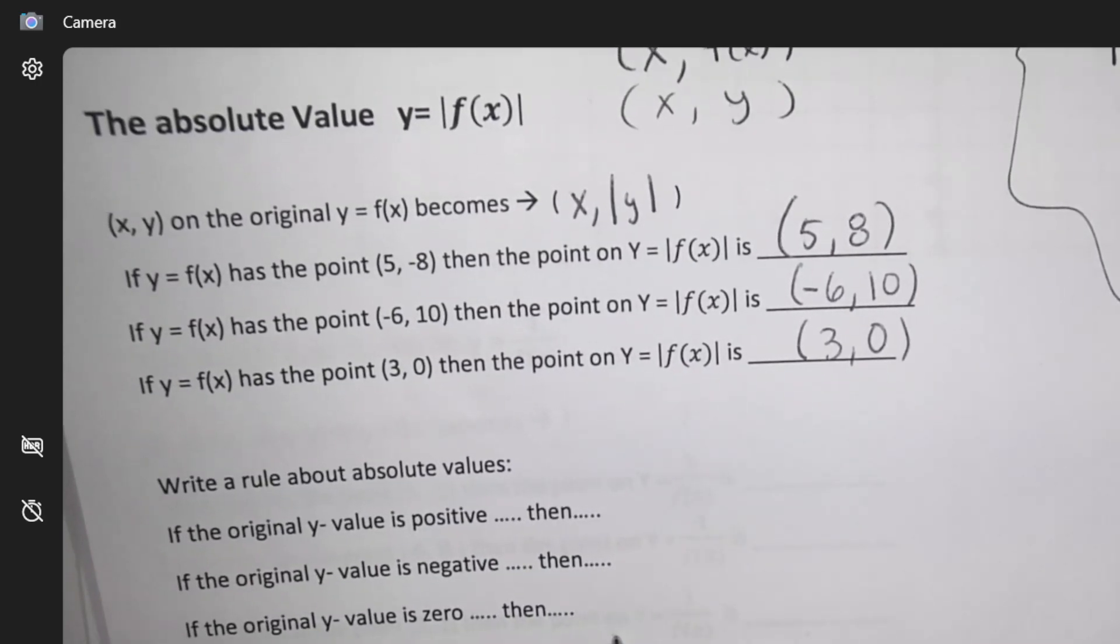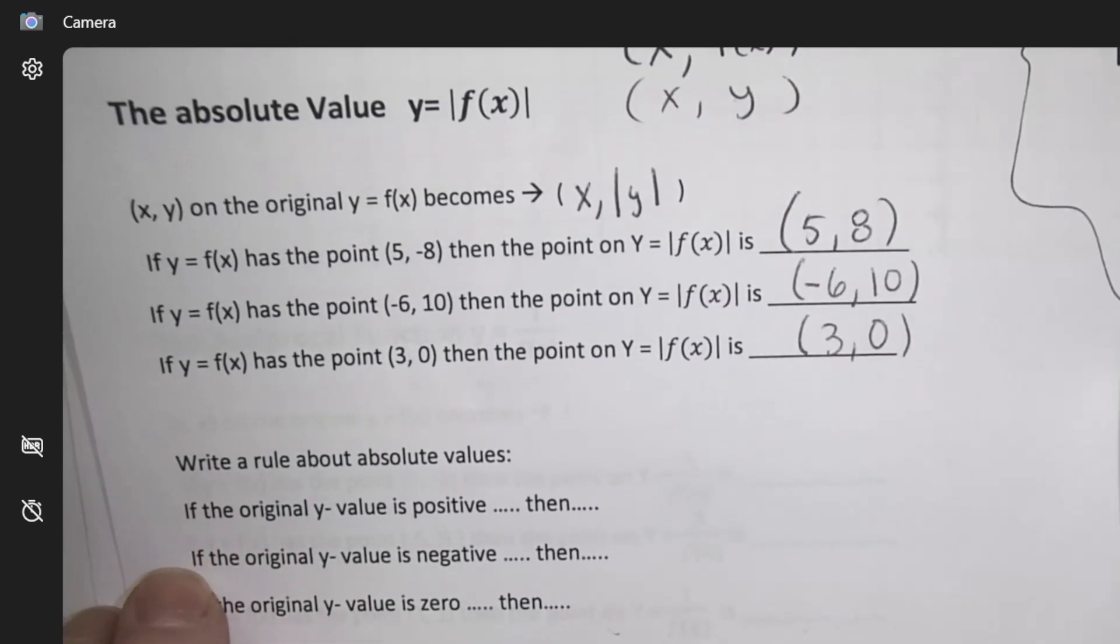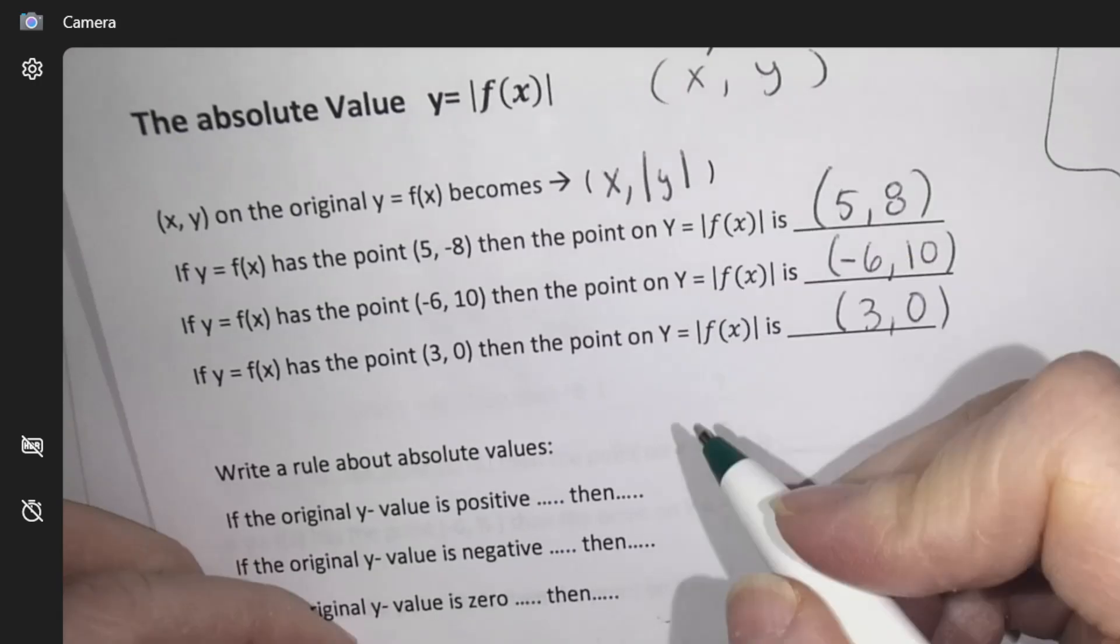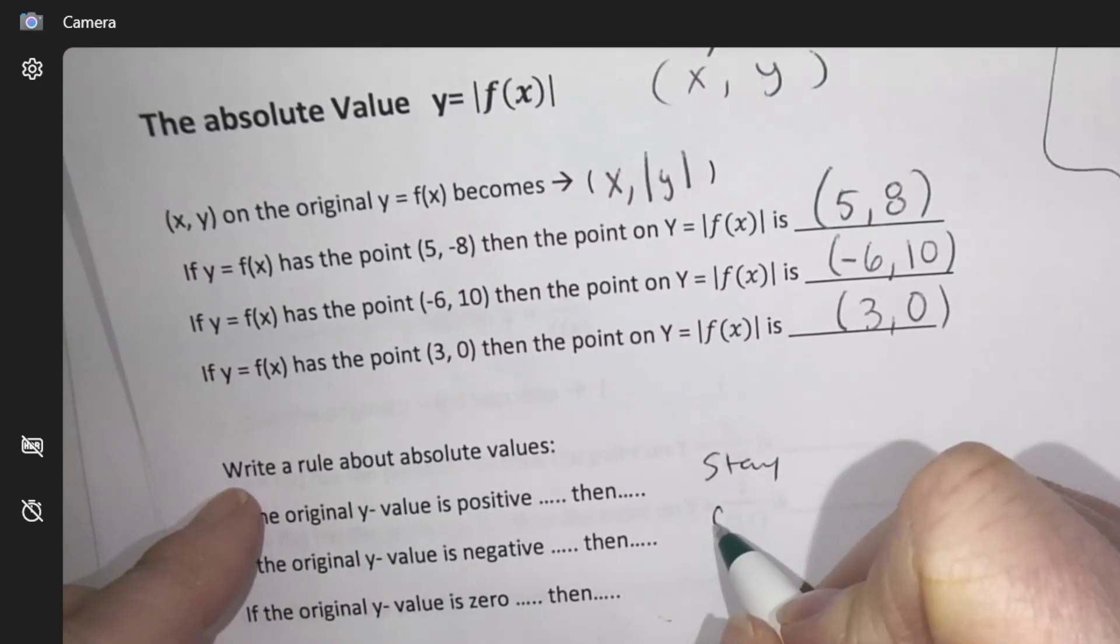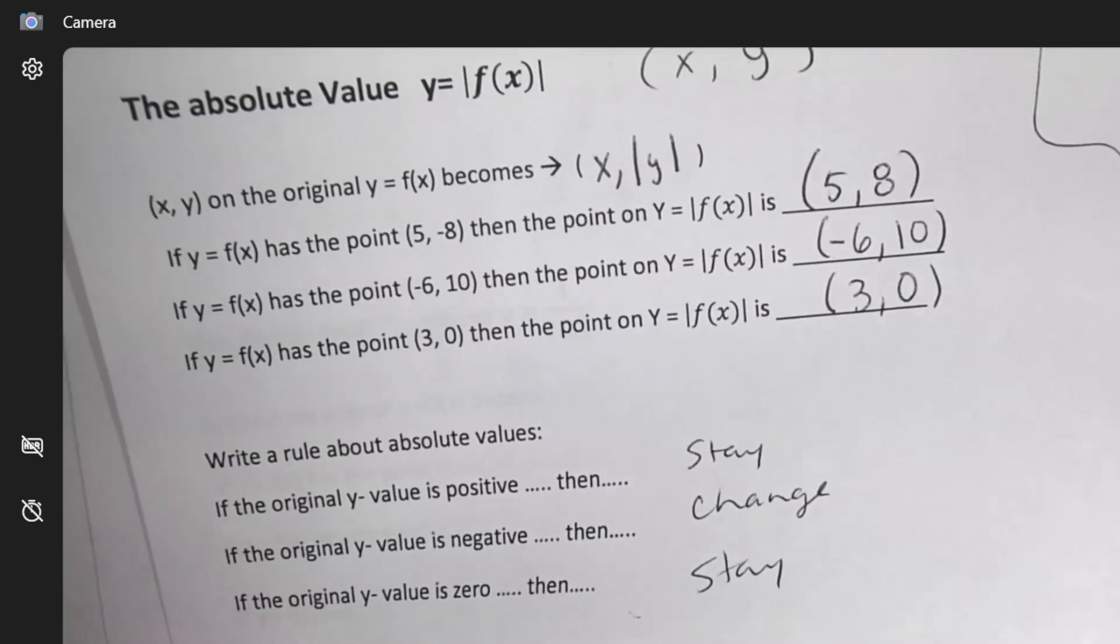I now realize that I just wrote that there. So this was the thing: positive stay, negative change, 0 stay. That's what I just wrote.